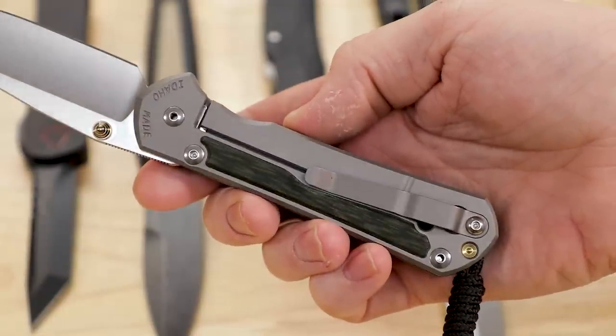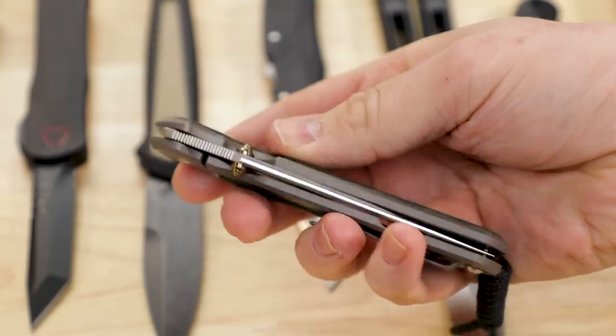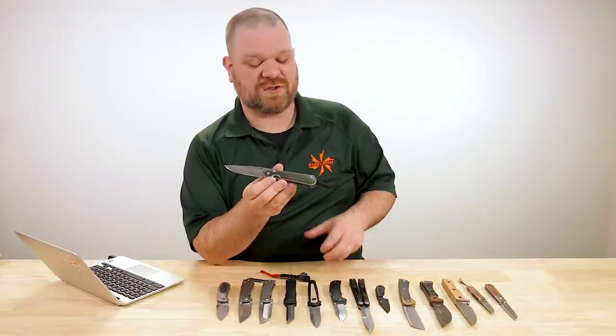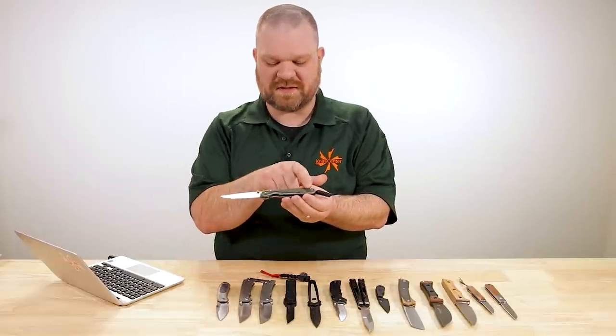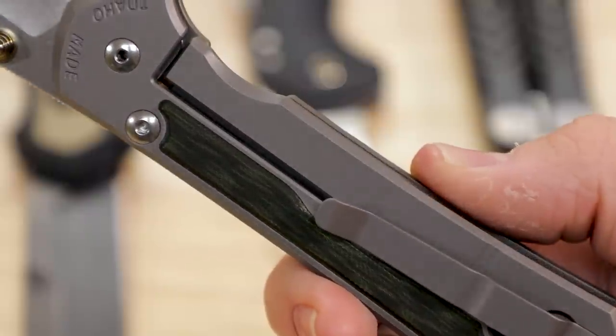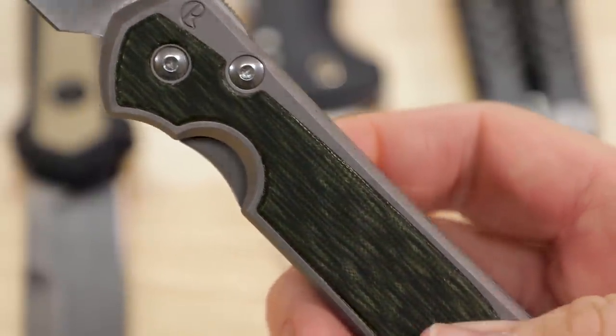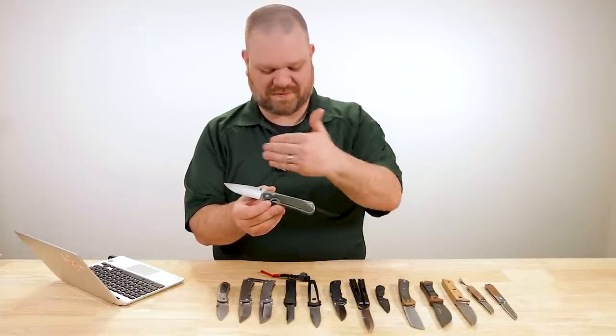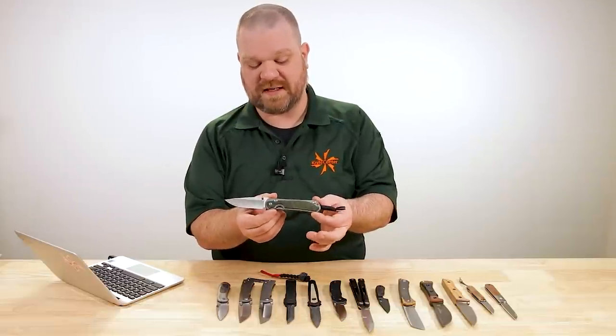But if you don't, it is a definite upgrade over the S45VN that the original run of this exclusive came in. Because in addition to having better edge retention than that steel, it's also more stainless than that steel, although both are pretty stainless. It's also considerably tougher, as in stronger. All three of those areas of knife performance, it scores really high marks. And especially on a knife that's kind of renowned for its hard use capability, the extra toughness is a really cool thing.